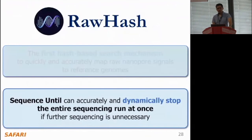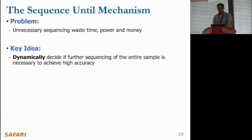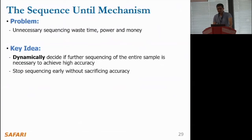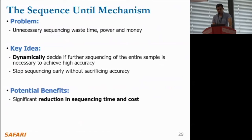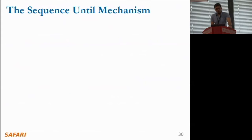This was the first part of our contribution in RawHash. In the second part, I'll describe the Sequence-Until mechanism. The problem we tackle is to avoid unnecessary sequencing that can waste time, power, and money. The Sequence-Until mechanism continuously evaluates if further sequencing of the entire sample is essential to achieve similar accuracy as full sequencing would provide. If not, we can stop sequencing early without significantly sacrificing accuracy. This method has the potential to significantly cut down both the time and cost associated with sequencing. The Sequence-Until mechanism is compatible with any raw signal analysis tool.